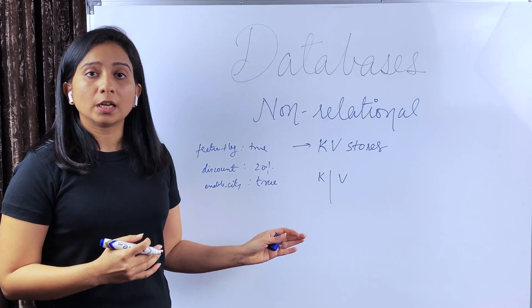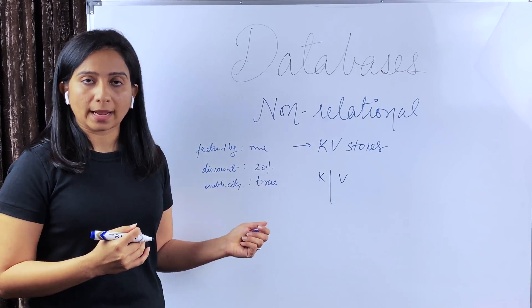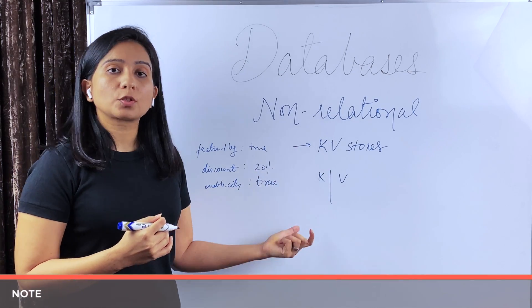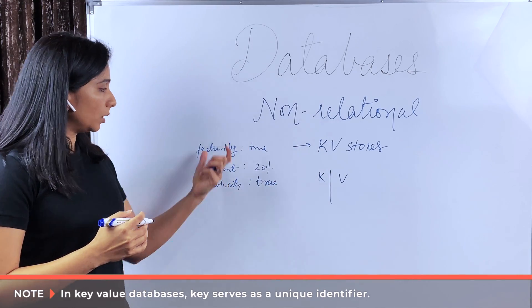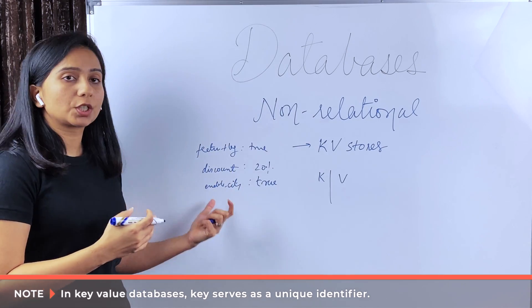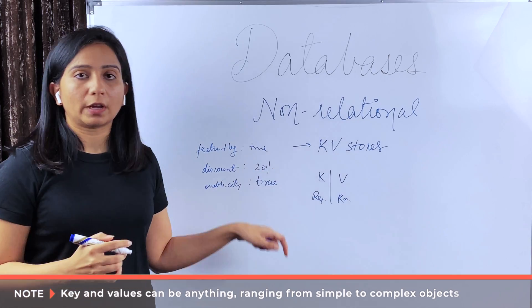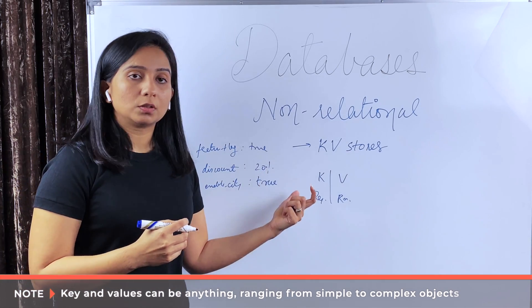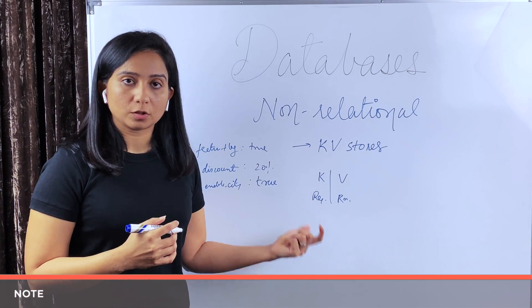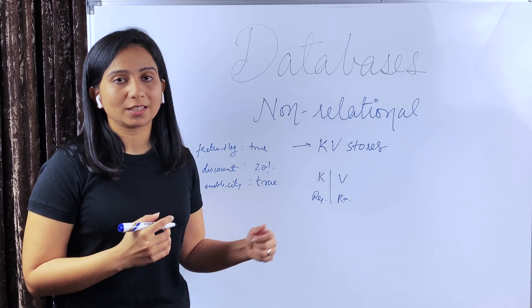The benefit of key value stores is they are quite fast and they provide quick access because most of the data stores are in memory. Apart from such kind of data like application related data or configuration related data, you can also store like request response into key value stores. Again, key value stores could be used in multiple caching solutions which we'll discuss in detail in the caching video.